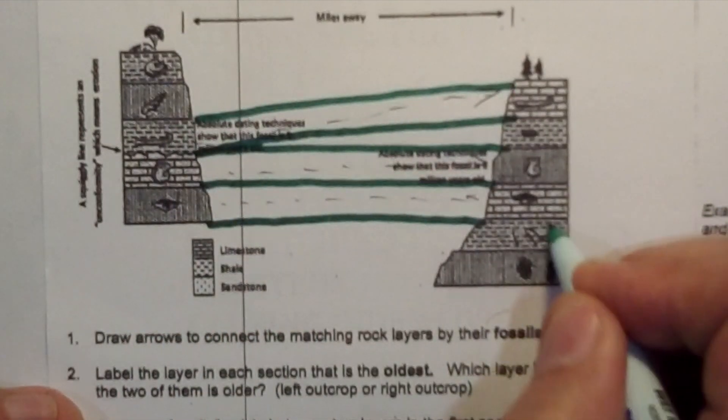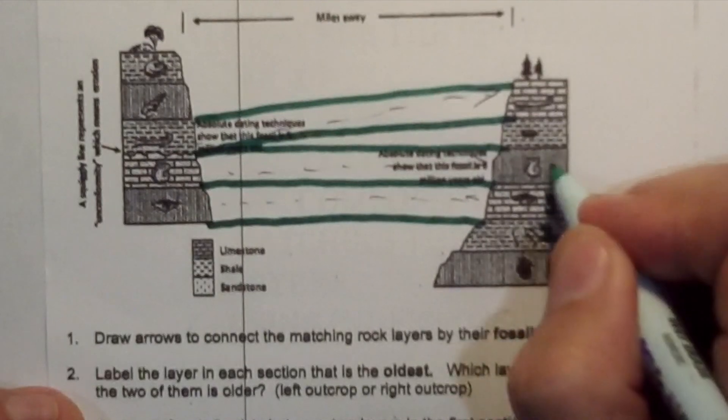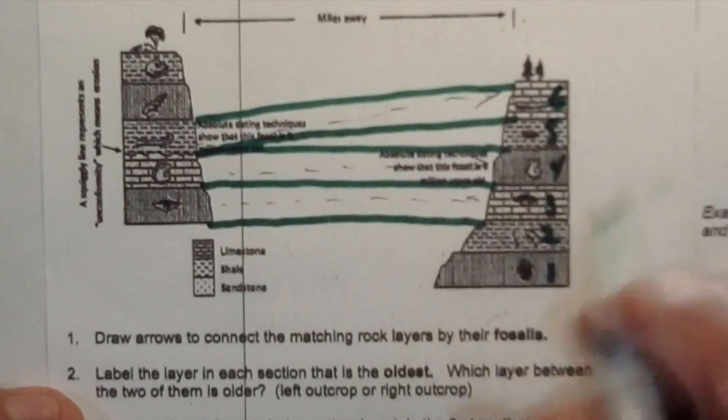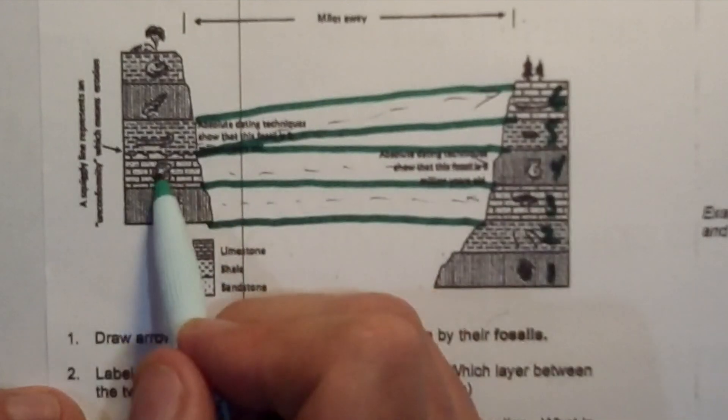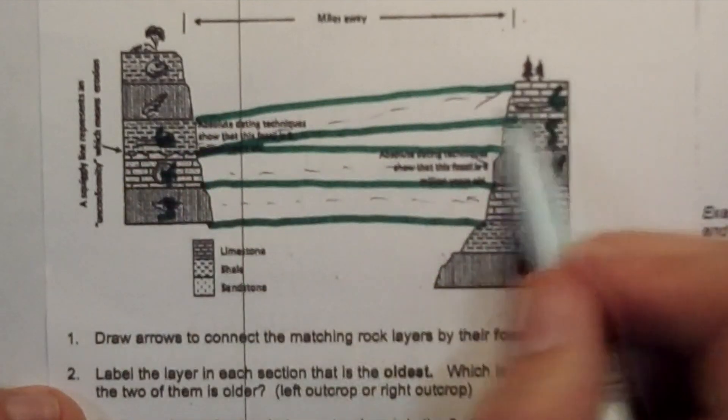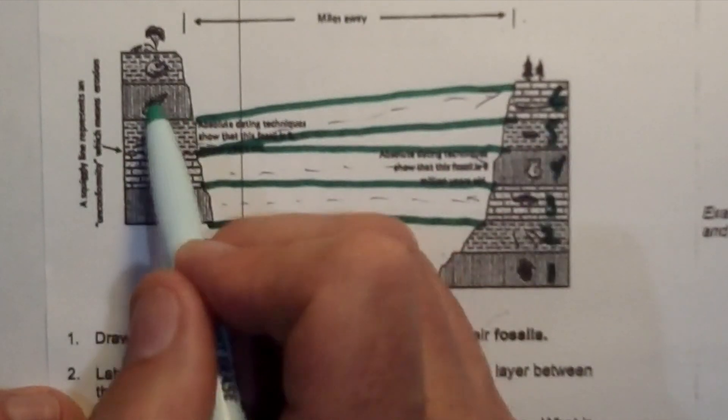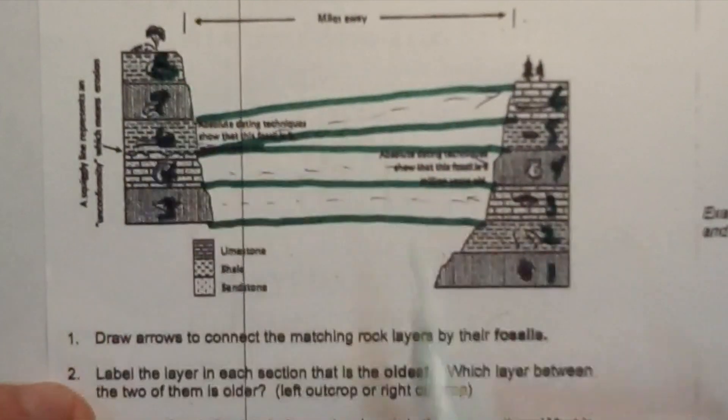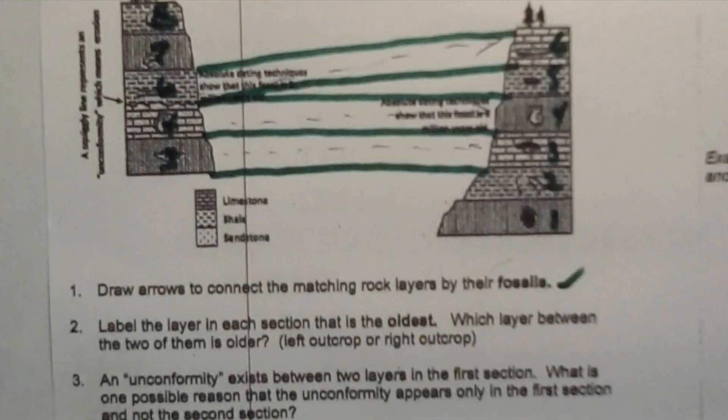If I number this, this would be 1, 2, 3, 4, 5, 6. Over here, this would be number 3, this would be 4, this would be 6. There's our unconformity, so there's a layer that's missing. 7 and 8. So I've connected the layers by their fossils.